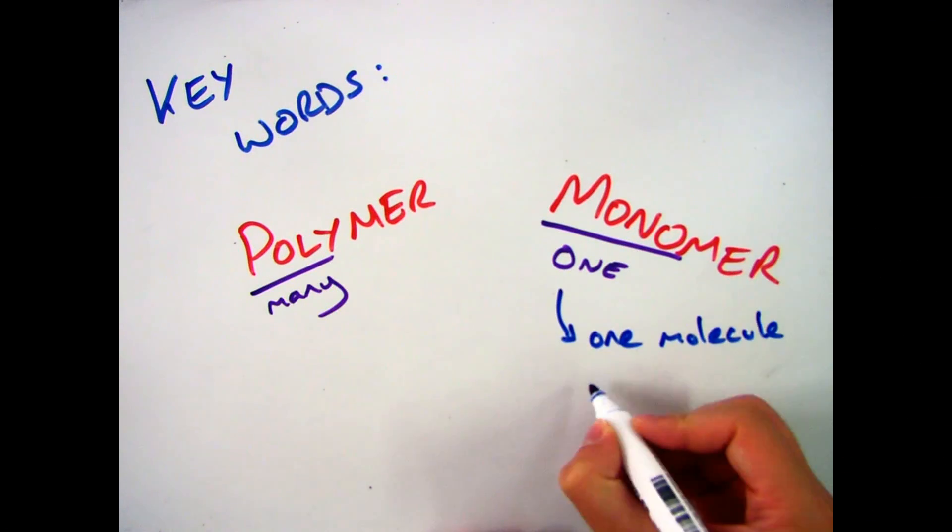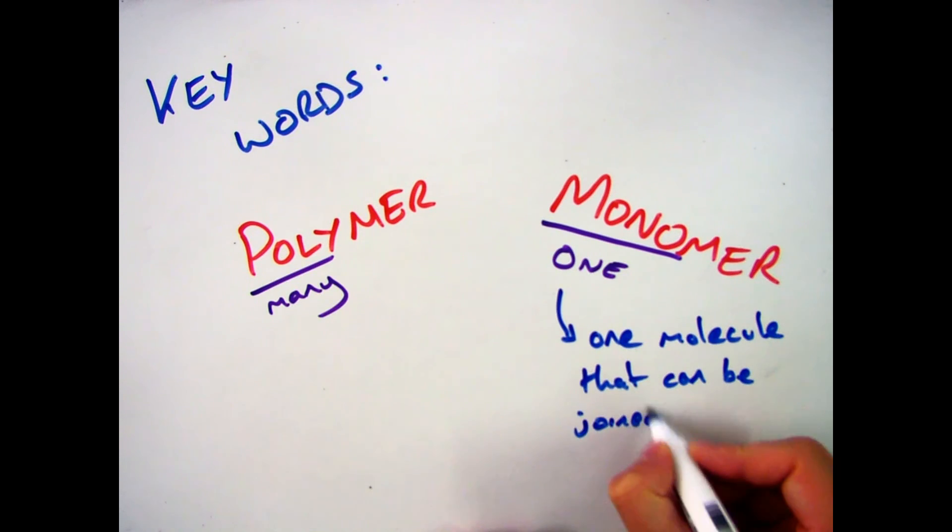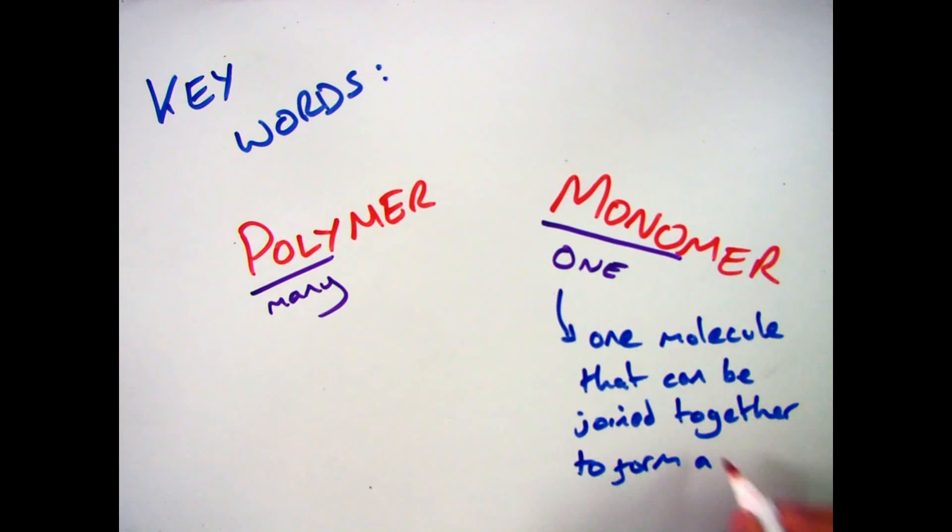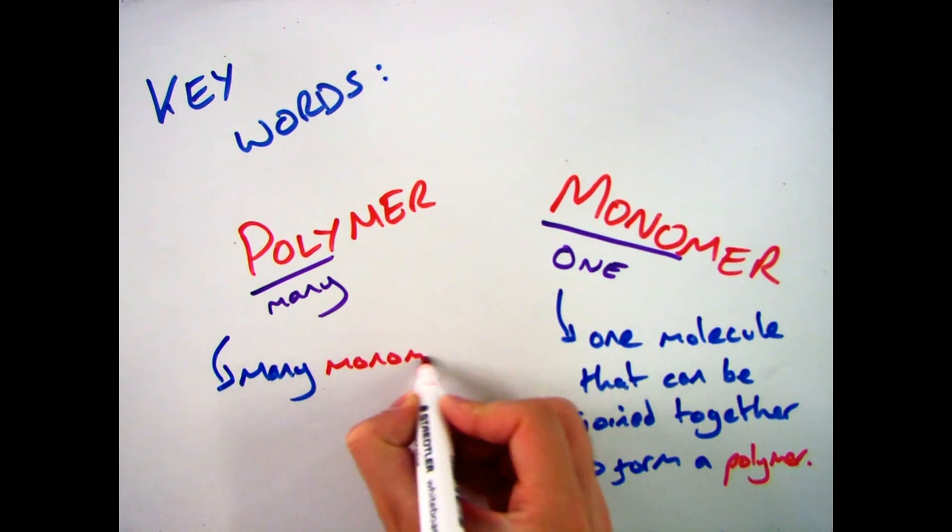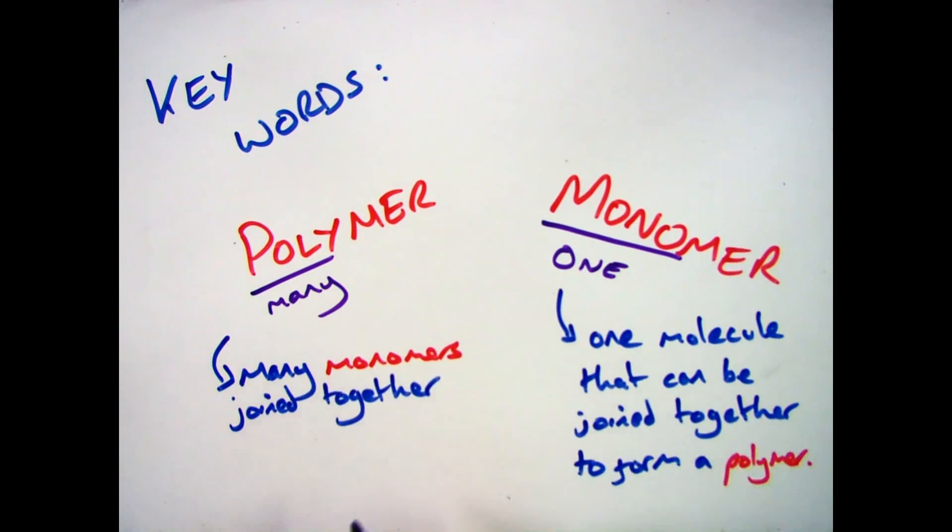Okay so if we go back to our definition then of a monomer. We have one molecule that can be joined together many times to form a polymer. And a polymer is many monomers joined together, as well as a long chain of covalently bonded carbon atoms.